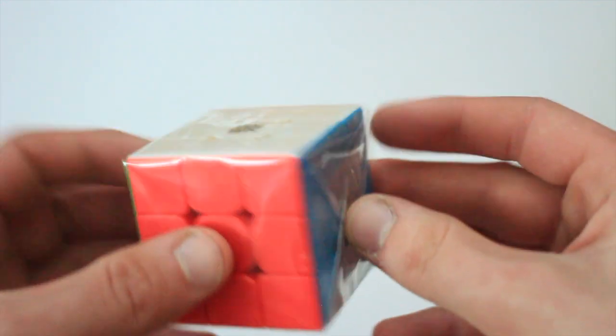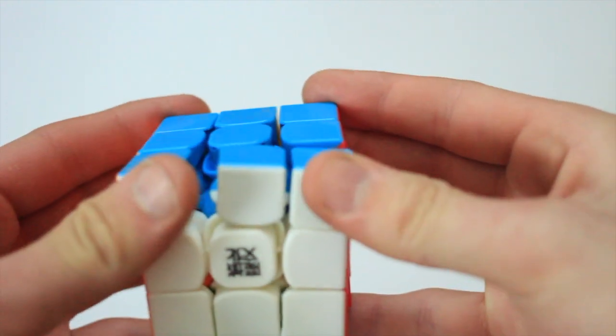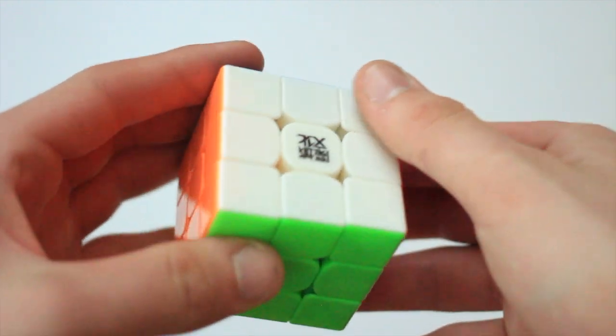Let's get rid of this plastic. It looks just like a normal GTS 2. I'm curious to see what these magnets are like. Let's try some first turns here.